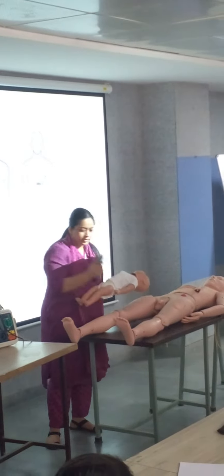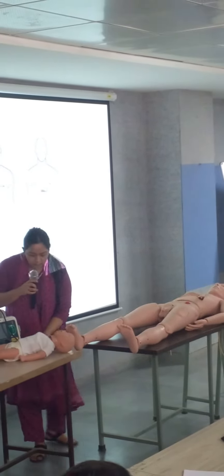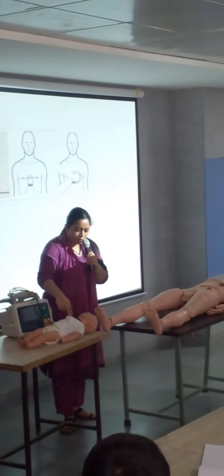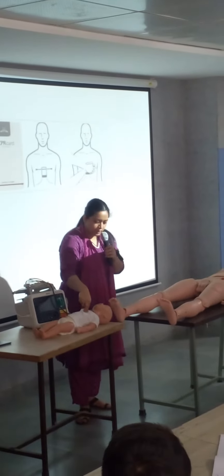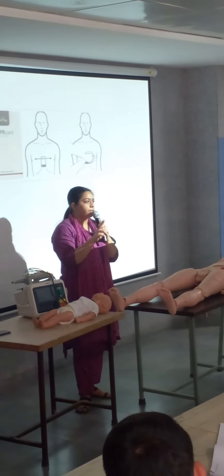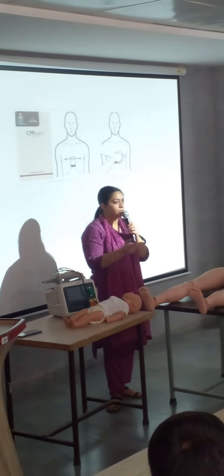For children, the chest compression is also different. The position is different. You have to draw an imaginary line, press with two fingers, and start giving compressions. If you have two rescuers, the ratio is 15 to 2. Otherwise, 30 to 2.